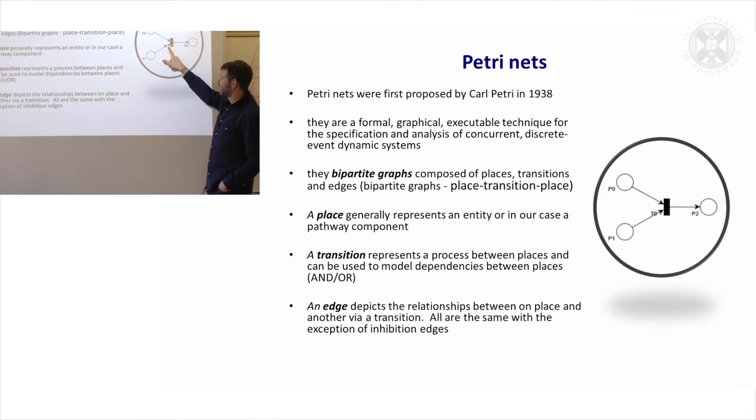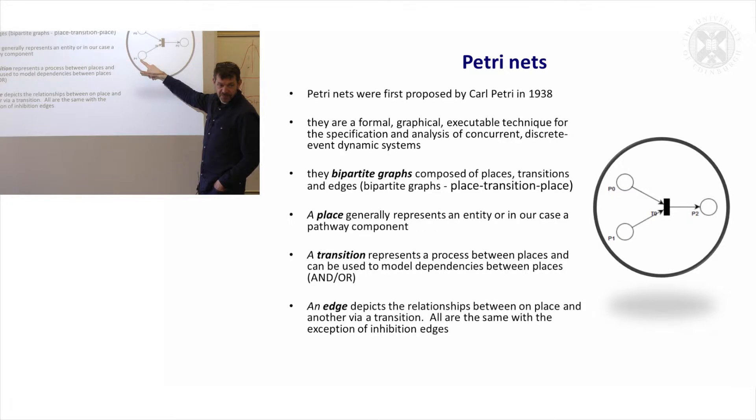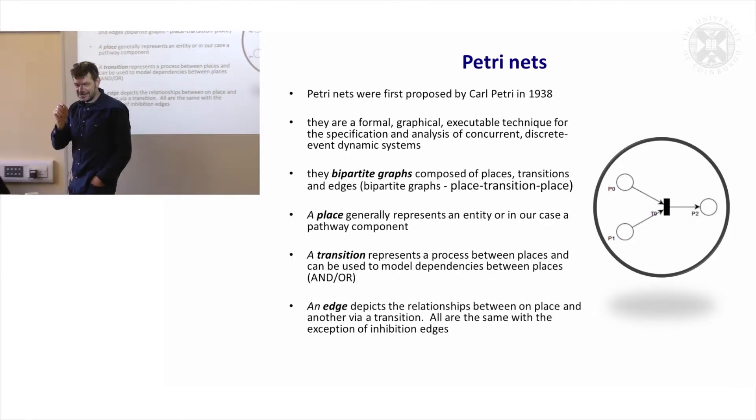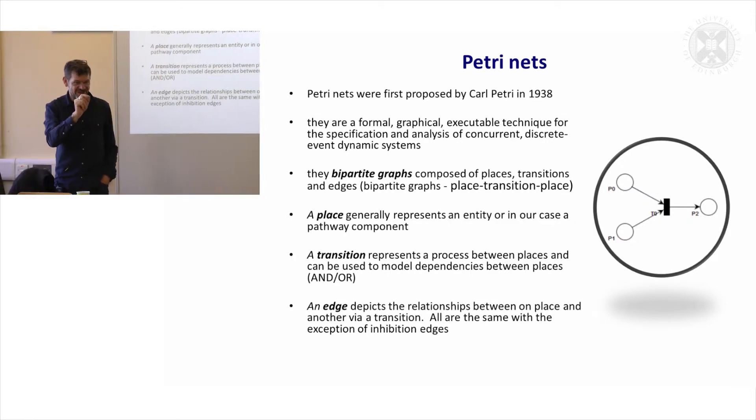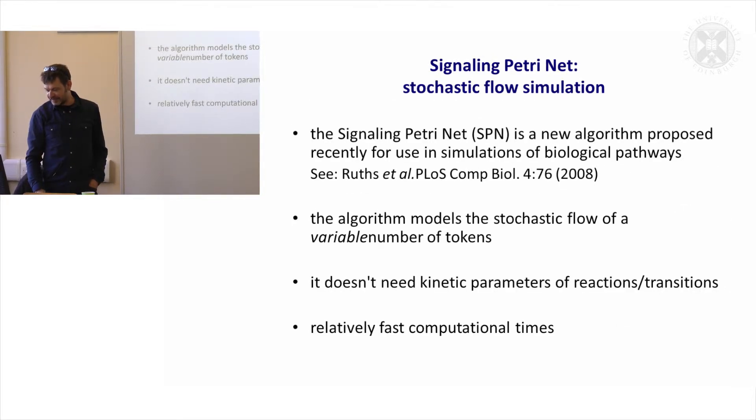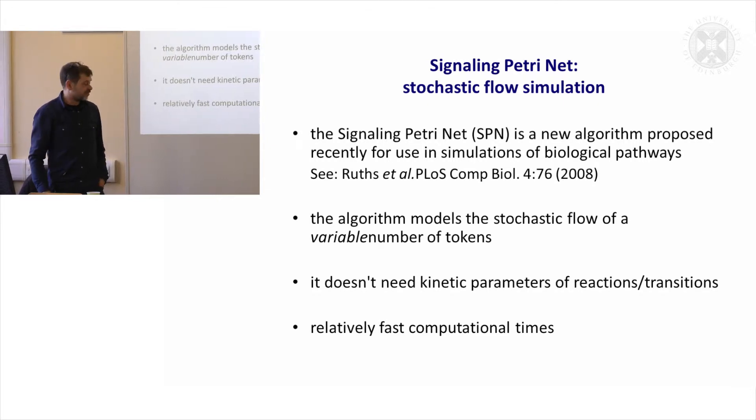When this guy here fires, it's going to move tokens from one place downstream from that place. So it's going to go from a parent to a child. It's a lot easier to actually see than it is to imagine, but I'm just asking you just to bear with me for this slightly tricky bit here. The nice thing about this is it doesn't need kinetic parameters, and it's a very fast computation.